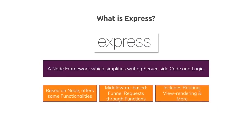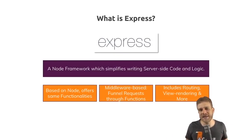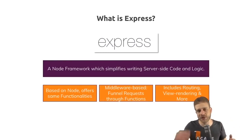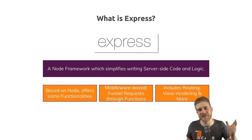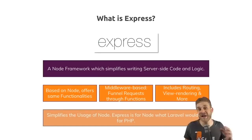Express also includes routing, which means we can handle different requests to different endpoints. This is important for connecting Angular to the backend. If we want to fetch a list of posts, we send a request to slash posts. If we want to create a new post, we send a different request to our domain slash post. ExpressJS allows us to implement this routing logic so that different requests to different URLs are handled correctly. ExpressJS simplifies the usage of Node.js — if you have a PHP background, you could compare it to Laravel.